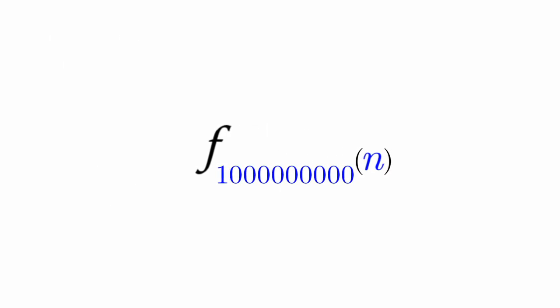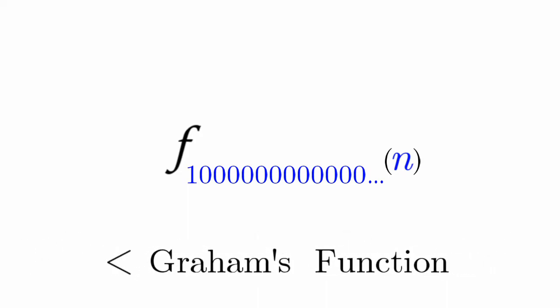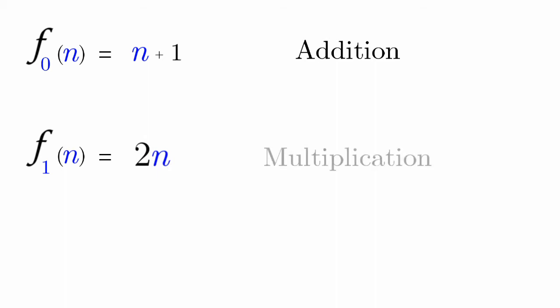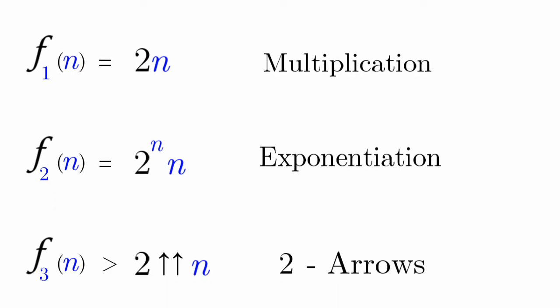You can keep increasing the level like this. But no matter how big the number is, it won't get as fast as Graham's function. Let me show you why. f sub 0 of n is equal to n plus 1, which resembles addition. f sub 1 of n is equal to 2 times n, which resembles multiplication. Now f sub 2 of n is equal to 2 to the power of n times n, which resembles exponentiation. f sub 3 of n resembles two arrows.